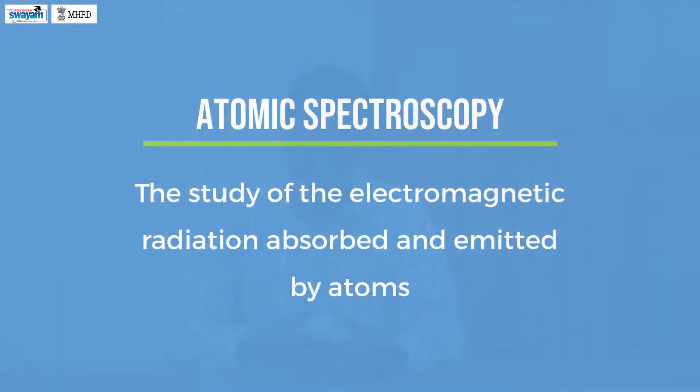Atomic spectroscopy is the study of electromagnetic radiation absorbed and emitted by atoms. Since each atom has its own unique light absorption and emission characteristics, we can exploit this information to analyze the composition of elements in a given sample. Electrons are in certain energy levels in atoms which we call atomic orbitals.